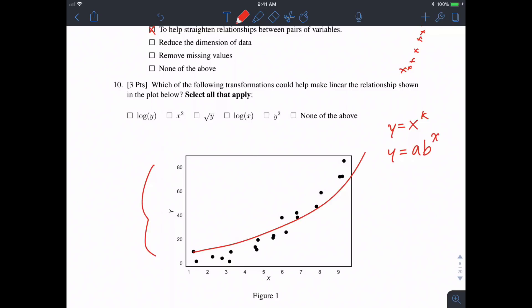So it's either y is polynomial in some high exponent in x, or y is exponential in x. What we want to do to linearize this relationship is make y smaller or equivalently make x bigger.